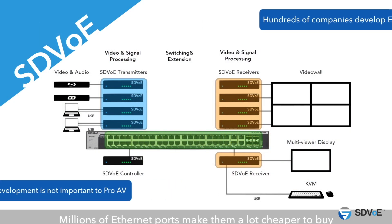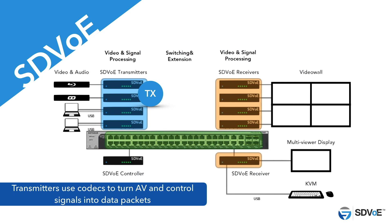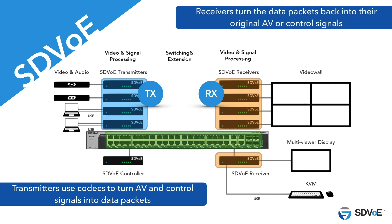Now let's turn our attention to the endpoints. In SDVoE, the transmitters, or TX units, are often called encoders because they use codecs to turn audio, video and control signals into data packets. Receivers, or RX units, are often called decoders due to their ability to turn those data packets back into their original AV or control signals. However, unlike a traditional receiver unit which attaches to a matrix switch, an SDVoE receiver, or decoder, is capable of far more.